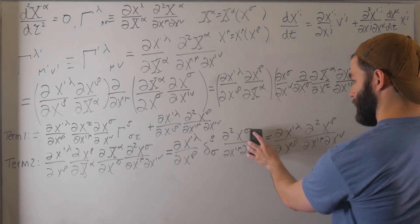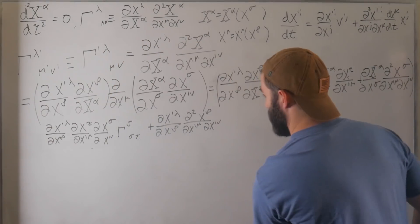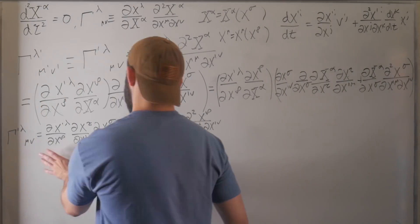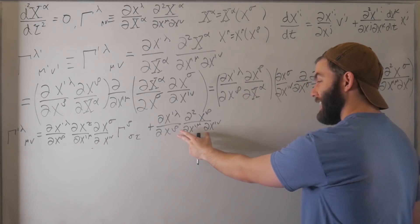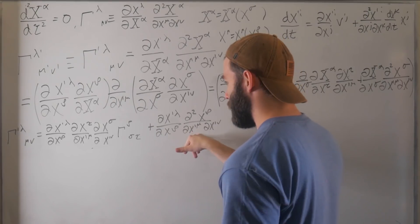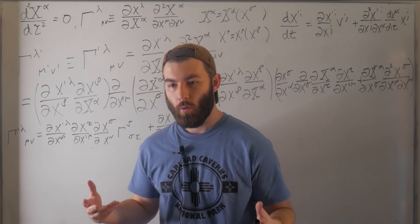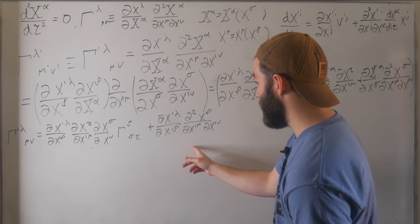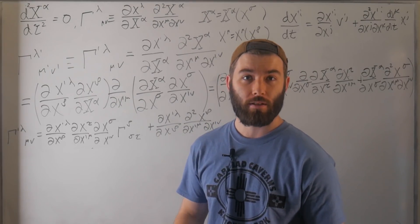So we can write that gamma-prime lambda-mu-nu equals the tensor transformation rule — term one — plus dx-prime-lambda over dx-rho times d-squared x-rho over dx-prime-mu dx-prime-nu, which is the second derivative term that spoils everything. There is a glimmer of hope though: when we took derivatives in the last video, it was also a second derivative term that ruined everything. So maybe we can modify what we mean by the derivative — extend our definition to contain a gamma term — such that the second derivative terms cancel and we're guaranteed to end up with a tensor. That will be the covariant derivative, the topic of the next video.